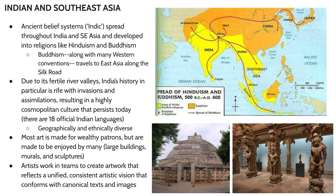One of the main things you need to understand for this unit is the spread of Hinduism and Buddhism, two of the main religions spreading starting around 500 BCE in this region. These ancient belief systems manifested as separate religions — Hinduism first, then Buddhism a little bit later. Like many things happening in East-West relations, information was traveling along the Silk Road.